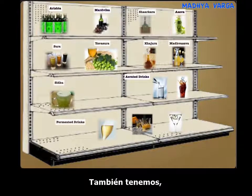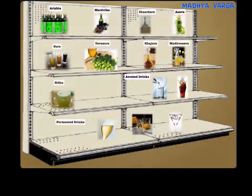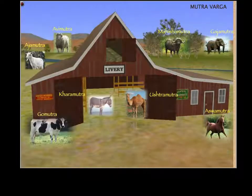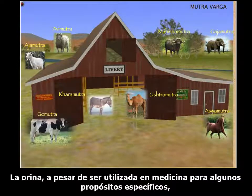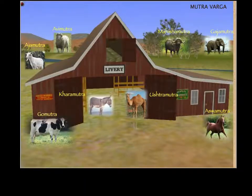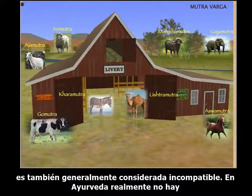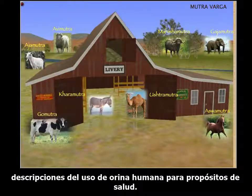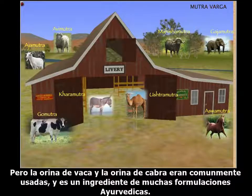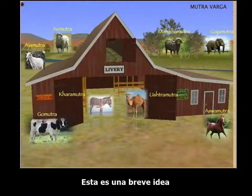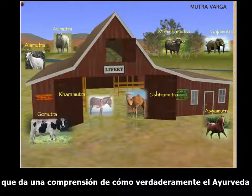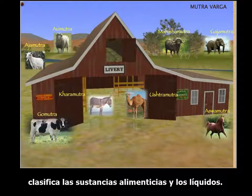After alcohol comes the classification of urine. Although urine is used in medicine for some specific purposes, it is generally considered incompatible. In Ayurveda, there are really no descriptions on the use of human urine for health purposes, but cow's urine and goat's urine were commonly used and are ingredients of many Ayurvedic formulations. This gives us a brief understanding of how Ayurveda classifies liquid food substances.